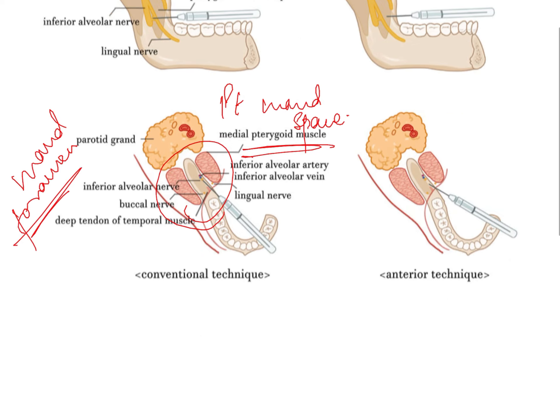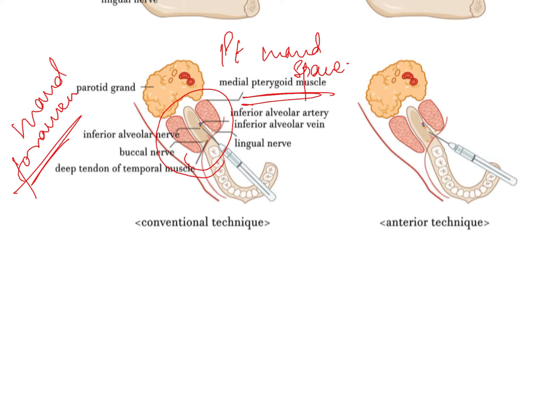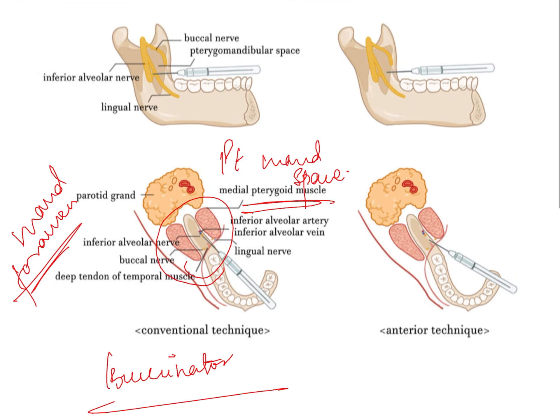An important related question is which muscle is pierced when giving an inferior alveolar nerve block — the answer is the buccinator muscle. There is also an anterior technique, but it is not well followed because it is very difficult to identify where the alveolar nerve block is going to be, so it's better not to go into the details of that.